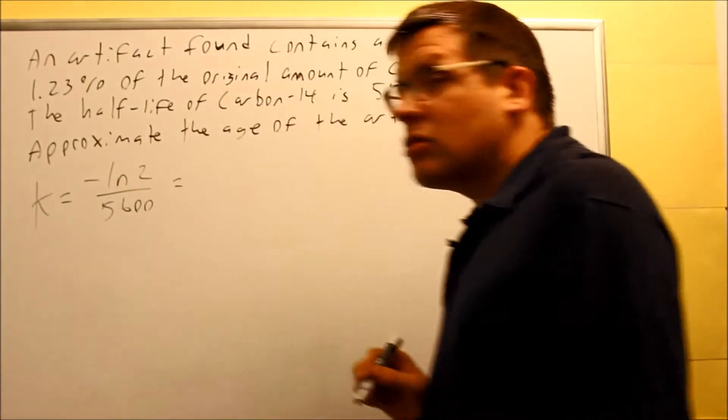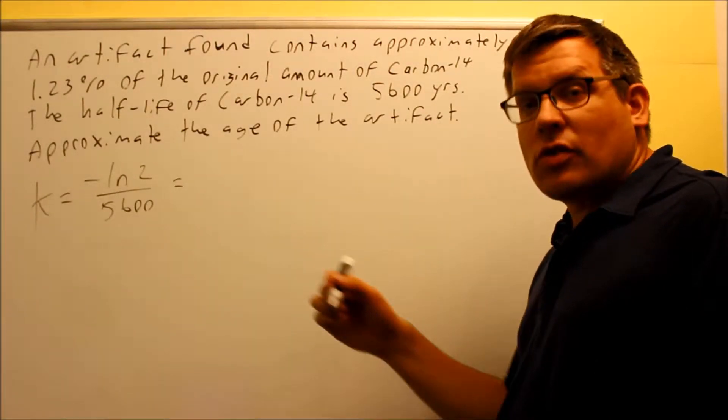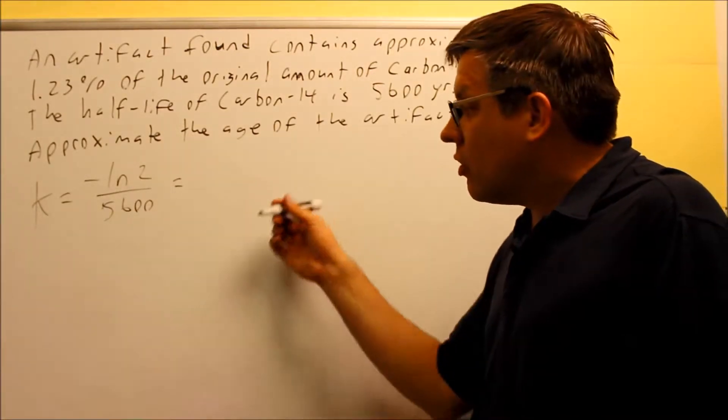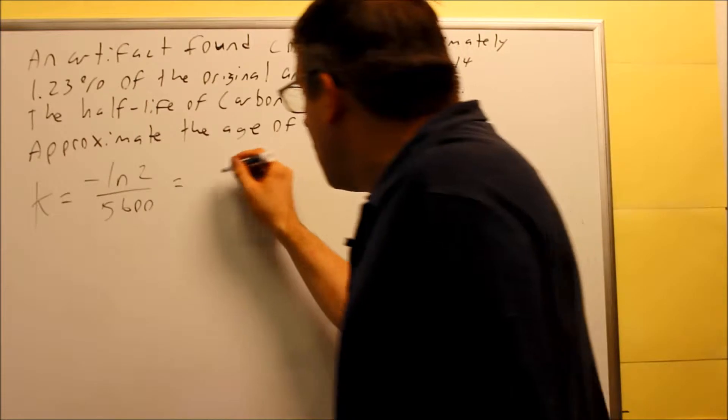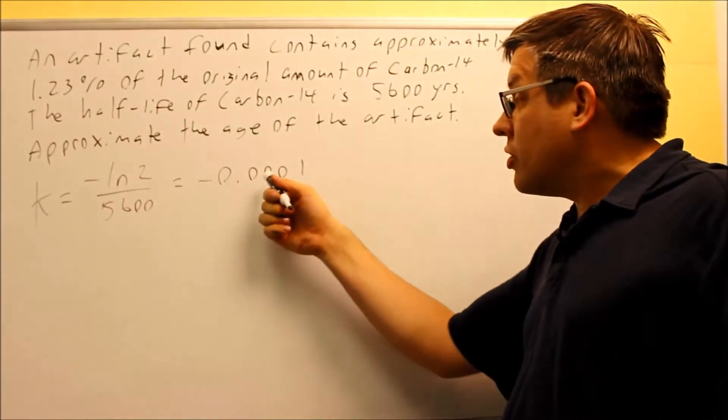Now, if you put this into a calculator, your calculator may display a scientific notation. I talked about in the previous example how you can convert it and change it over. So assuming that you've watched that video, we know that our answer is going to be negative 0.0001.